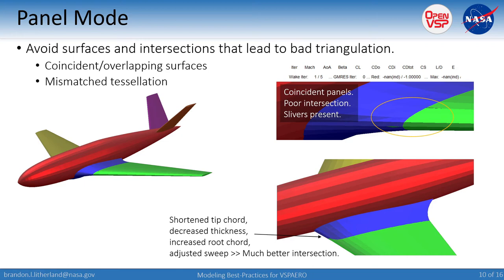Another thing to watch out for in panel mode is to avoid intersections that cause bad triangulation. When we first tried to put a glove and bat region together, there were slivers poking through where the intersection had difficulty triangulating because the surfaces were exactly coincident. Running that gives not-a-number and fails. But if you shorten the tip chord, decrease the thickness, give it some taper, and create a well-defined region of intersection, it all comes together nicely with a good intersection curve and will run in panel mode just fine.